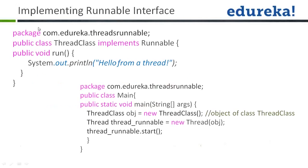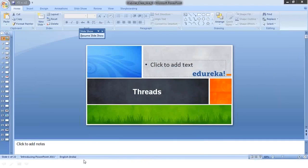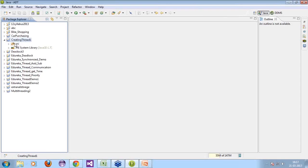First, implementing the Runnable interface. You have a class called ThreadClass that implements Runnable. As soon as you implement Runnable, you have a method public void run(), and within that you write System.out.println('Hello from a thread'). In the main class, you create an object: Thread threadRunnable = new Thread(object), passing the object of the class that implemented Runnable. Finally, threadRunnable.start() starts the thread.